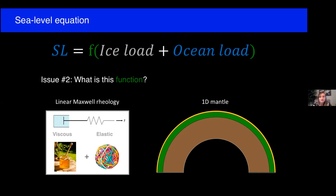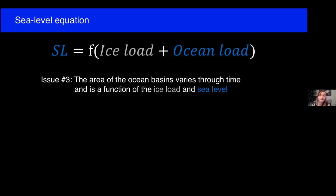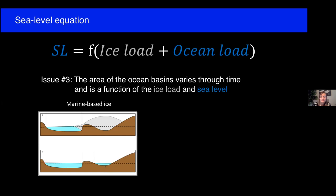Our second issue is defining the response function. In principle, we need to know how the solid earth's surface and gravitational field respond to applied surface stresses — meaning we need to know the viscous and elastic properties of the entirety of the solid earth. GIA calculations typically assume a linear Maxwell rheology, which is the simplest combination of viscous and elastic elements. Until recently, most GIA predictions were based on 1D earth models, which assume that earth's viscoelastic structure varies only with depth — think of an onion-skin view of the world. In this case, the response can be calculated semi-analytically by Green's functions.